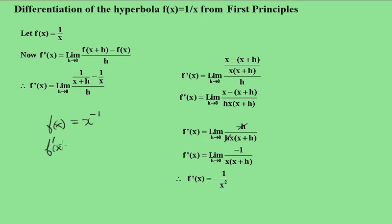f'(x) becomes -x to the negative 2. So we're going to reduce that exponent by 1, which of course is -1/x². So that's what we've got here.